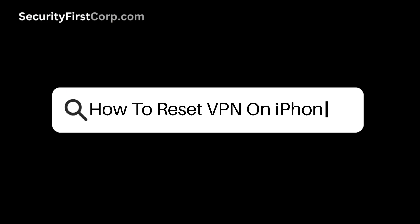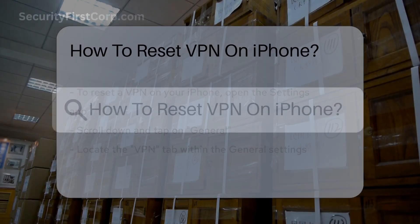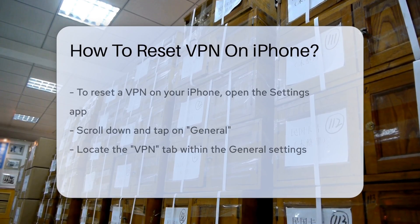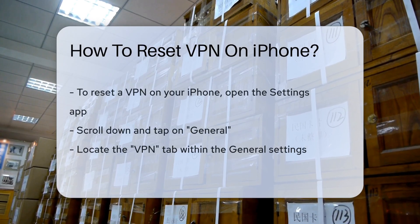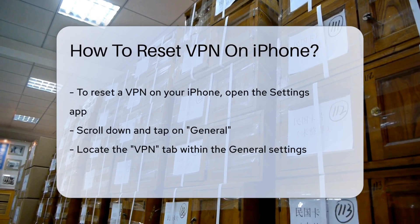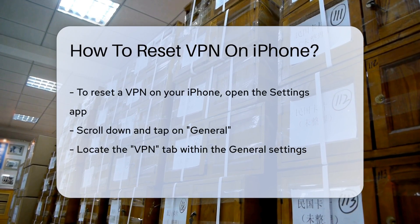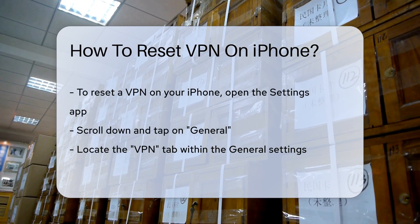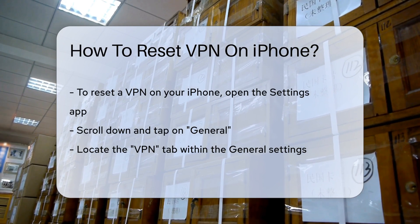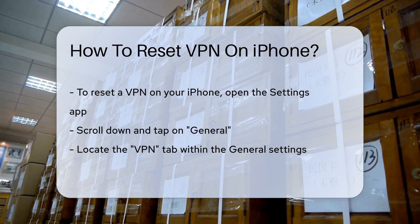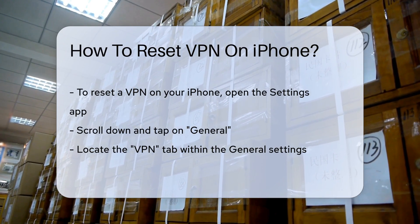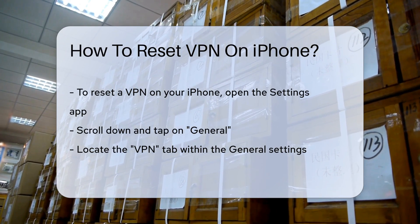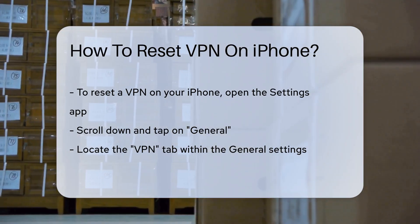When it comes to resetting a VPN on your iPhone, the process is straightforward and can be done in just a few simple steps. Firstly, open your iPhone's Settings app. Next, scroll down and tap on the General option. From there, locate the VPN tab.